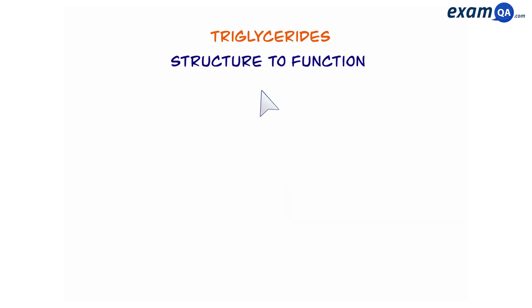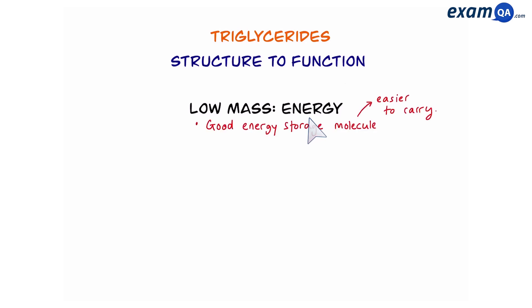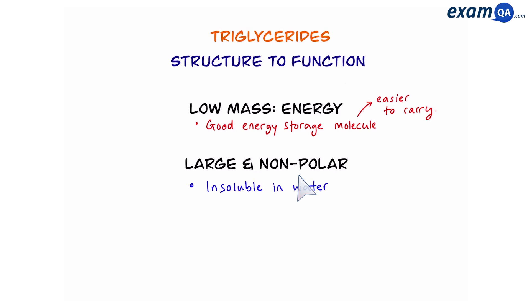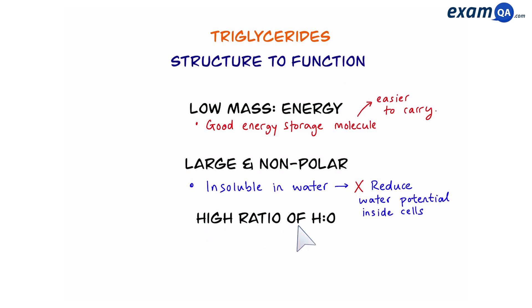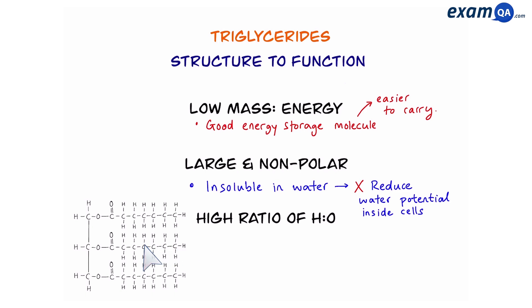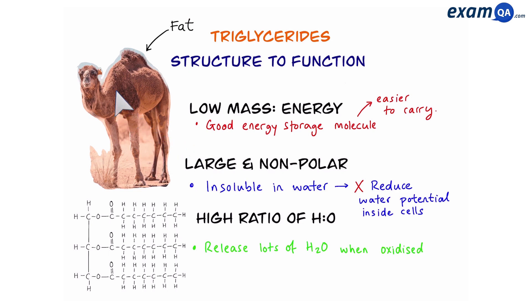Let's finish by talking about how the structure of triglycerides relates to their function. First, they have a low mass-to-energy ratio, meaning they are good energy storage molecules — they don't weigh much but carry a lot of energy, making it easier for animals to carry triglycerides as opposed to carbohydrates. Also, they are large and non-polar, which makes them insoluble in water and does not reduce the water potential inside cells, meaning cells will not swell up. Finally, they have a high ratio of hydrogen to oxygen, so a lot of water can be released when oxidized — useful for animals like camels that live in dry deserts and store fat in their hump.